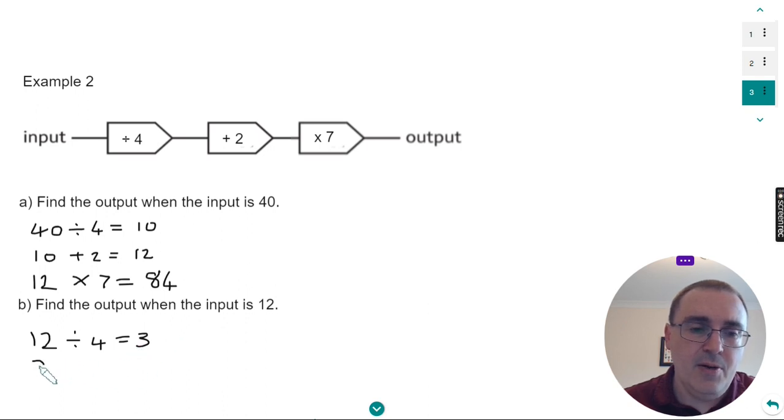Put this on the next line. The next operation is plus two. We need to add two to the three. So three add two is five.